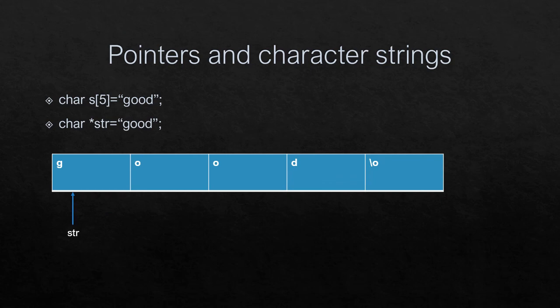Pointer and character string: char s[5] = "good". You can declare a char pointer: char *str and assign the string to it. The pointer str will then point to the first character of the string.